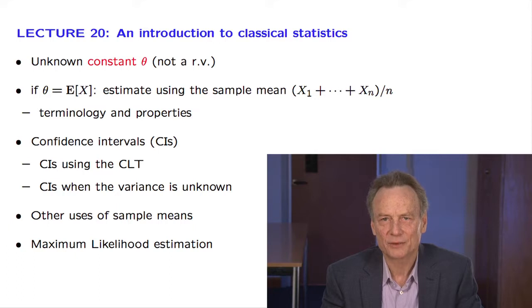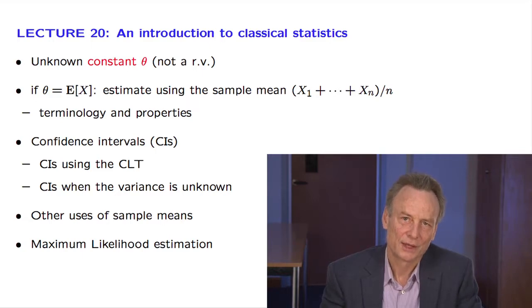Recall that in the Bayesian framework unknown quantities are viewed as random variables that have a certain prior distribution. In contrast, in the classical setting an unknown quantity is viewed as a non-random constant that just happens to be unknown.